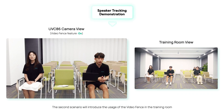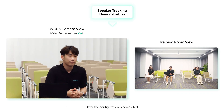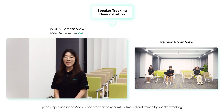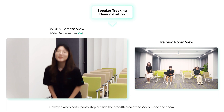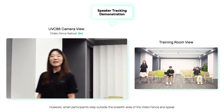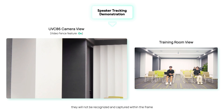The second scenario introduces the usage of the video fence in the training room. After the configuration is completed, people standing within the video fence area can be accurately detected and framed by speaker tracking. However, when participants step outside the video fence area, they will not be recognized and captured within the frame.